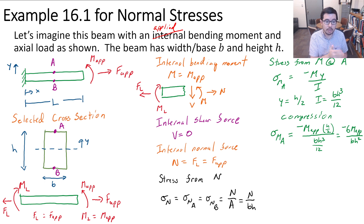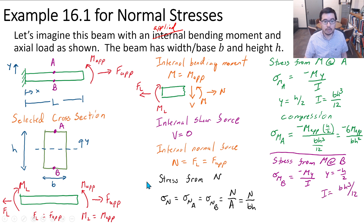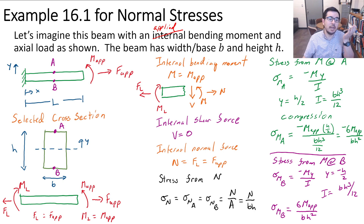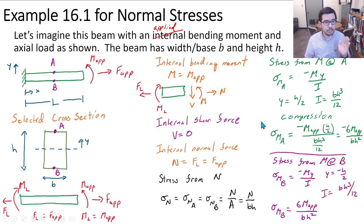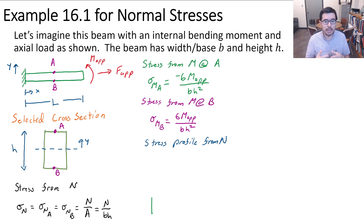At location B, it's going to be in tension. Using the same flexure formula, what changes is y — now y = −h/2 since B is at the bottom. The math tells us it's going to be positive, confirming tension at B. Sometimes I just look at the problem and determine compression or tension directly, then assign the sign appropriately.